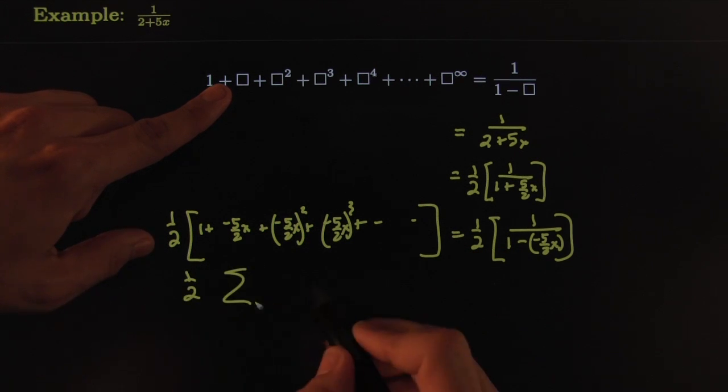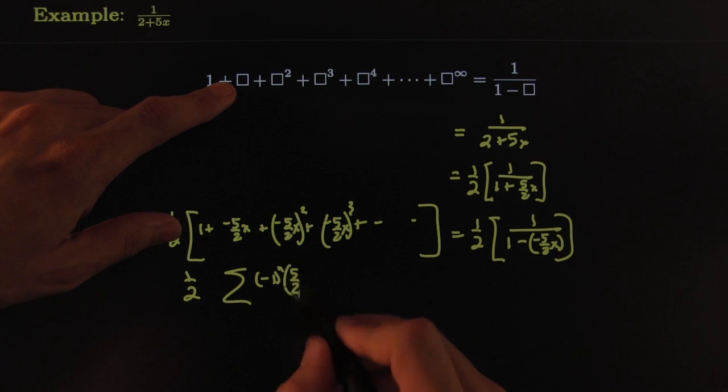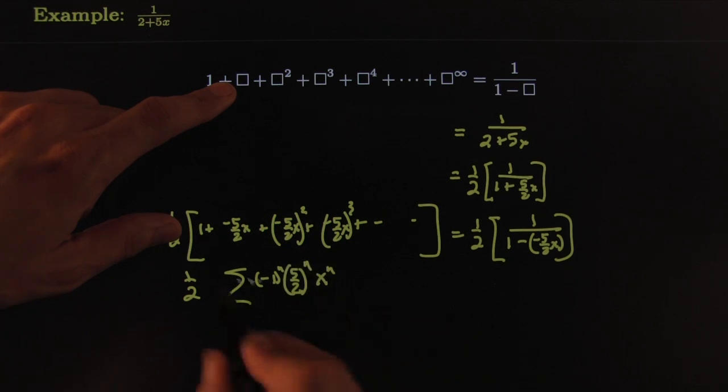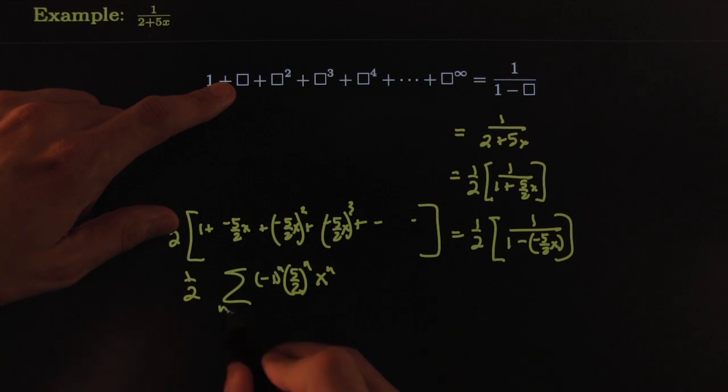And you could clean that up: 1 half times the summation of negative 1 to the n, because it's alternating signs. I see a 5 halves to the n, I see an X to the n as n runs from 0 to infinity.